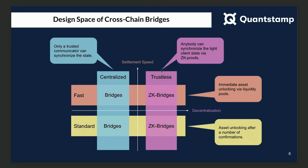We looked at the design space of cross-chain bridges and categorized them across two dimensions. The first is the degree of decentralization, and the second is the settlement speed. Originally, people worked on standard centralized bridges, where you typically wait seven days before funds get released and the communicator itself is a central party. Boba introduced fast centralized bridges with liquidity pools, where operators take on the risk themselves but allow you to exchange funds much quicker.